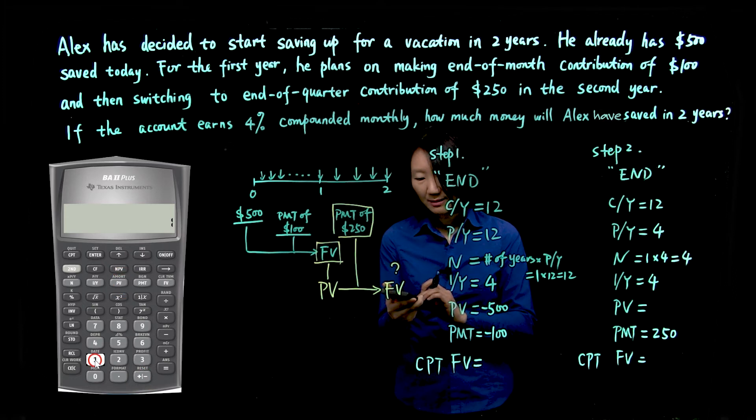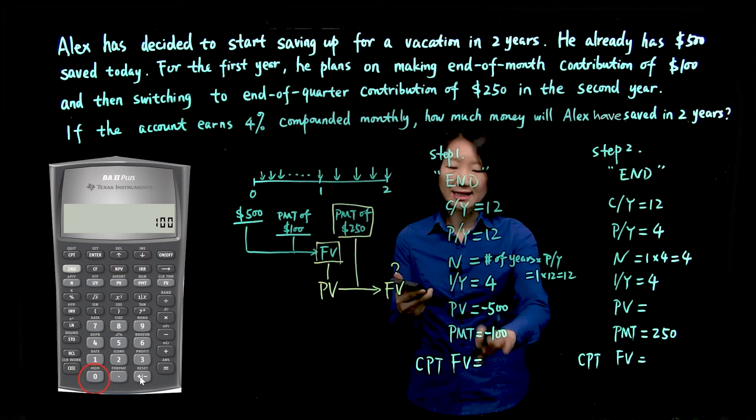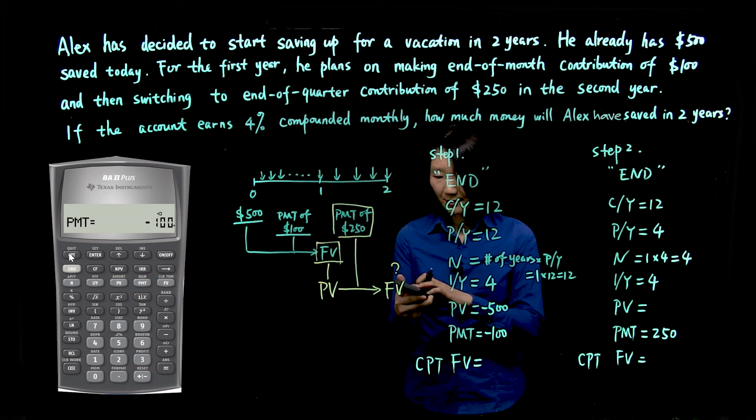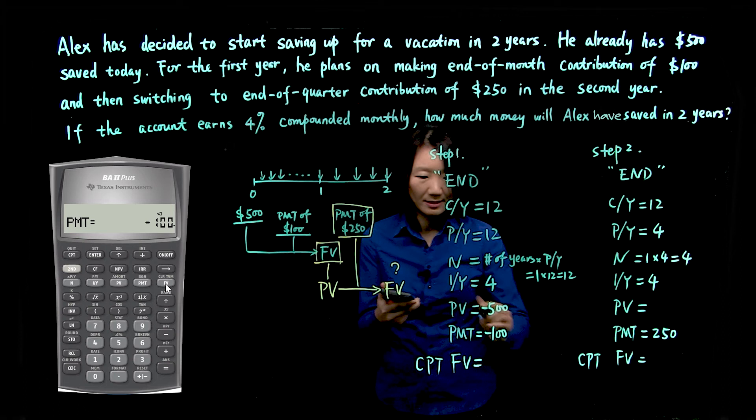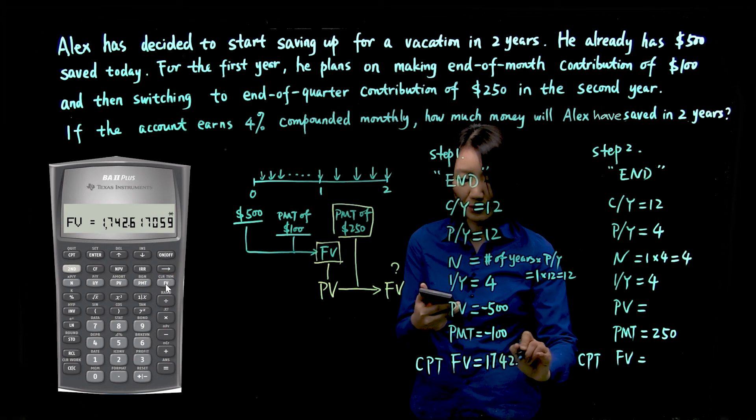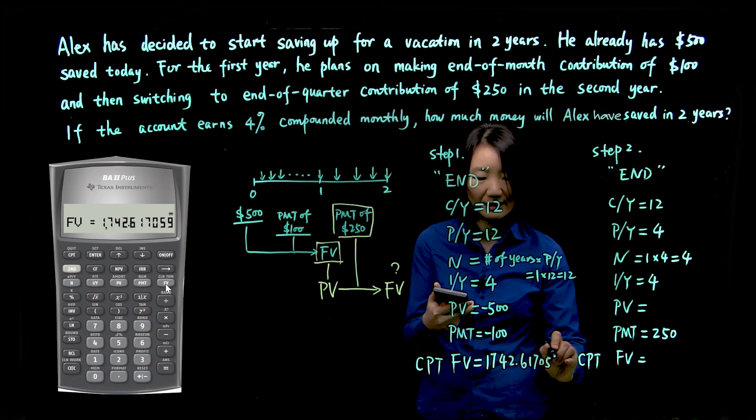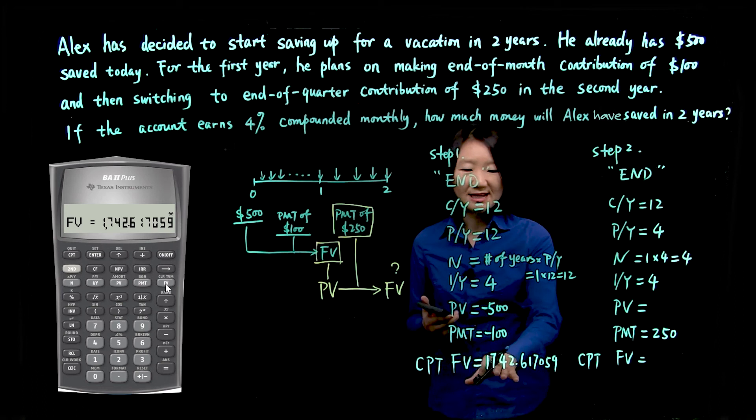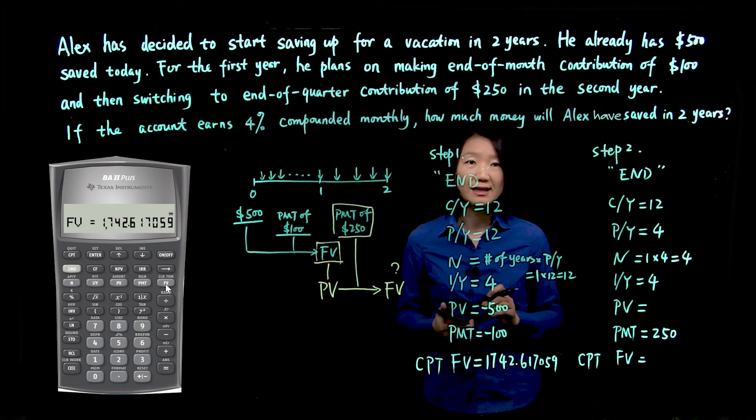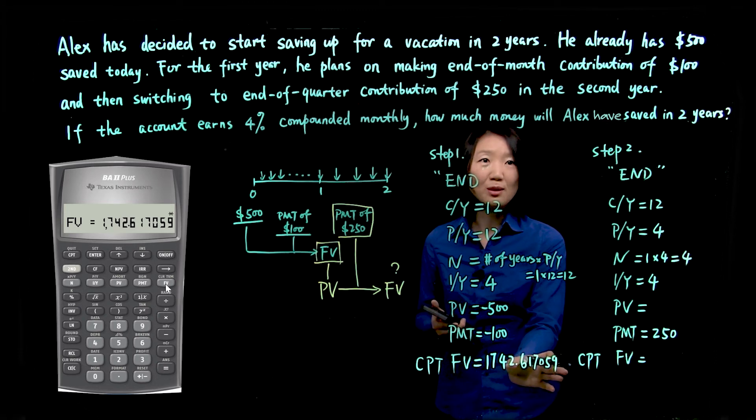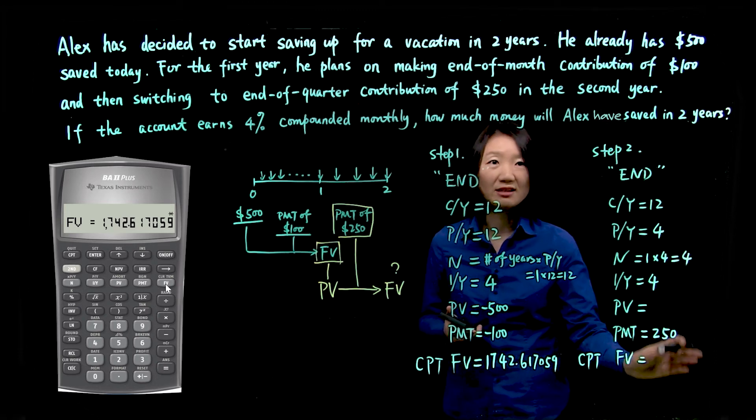PMT is 100. Again, we'll make it negative. Compute future value. It'll be 1742.617059. So this future value calculated to be 1742.617059. Notice I did not round it here, because it's a middle step. We'll only round it once we calculate our final results.